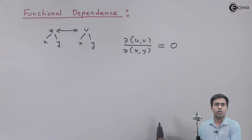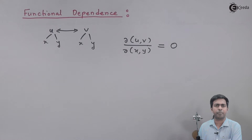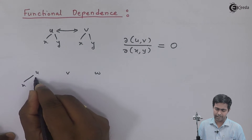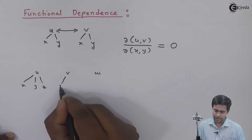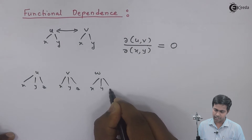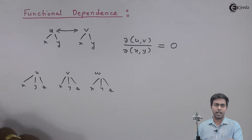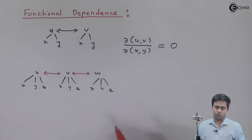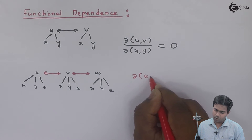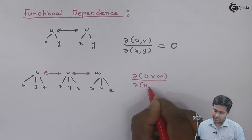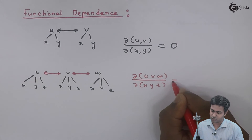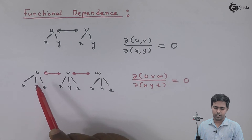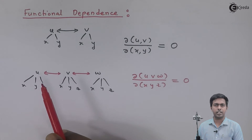Similarly, we can examine functional dependency between more variables. Let's say there is u, v, and w, where u, v, and w are all functions of x, y, and z. If I want to understand the functional dependence between u, v, and w, I can use the condition: the Jacobian of u, v, w with respect to x, y, and z. If this condition is equal to 0, then there is functional dependency between u, v, and w.